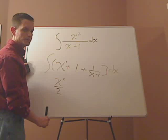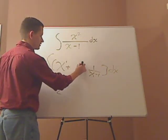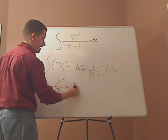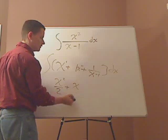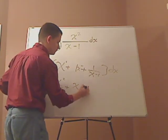You do the same thing with the 1. The 1 implies x to the 0. So you have x to the 0, you add 1 to that. That's x over 1, which would just make it x.